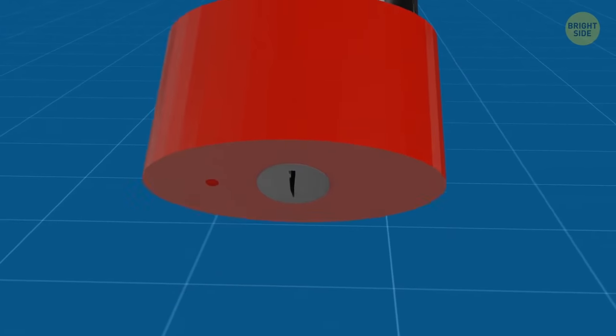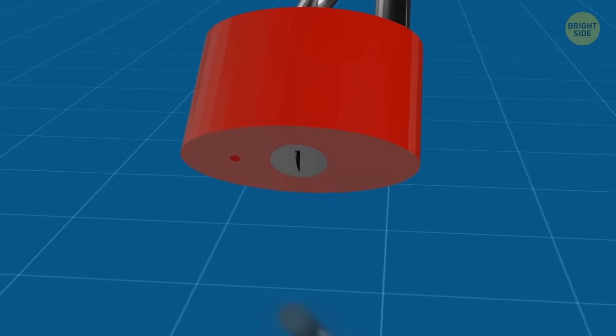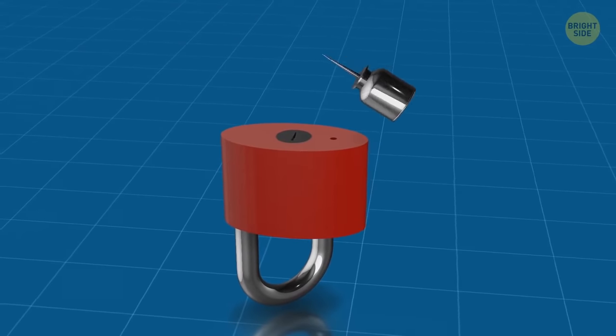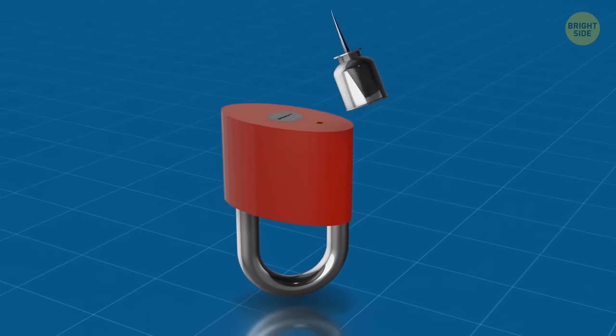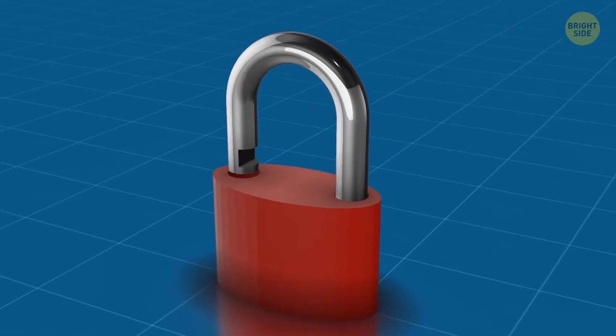A tiny hole on the bottom of a padlock is there to drain water to help avoid corrosion. Plus, it's the most convenient place to lubricate a padlock. A drop of oil in there will make it open and close easier.